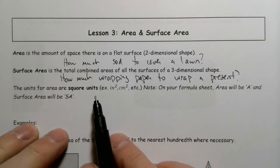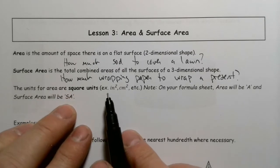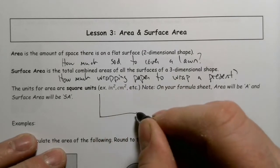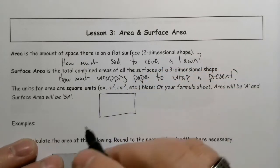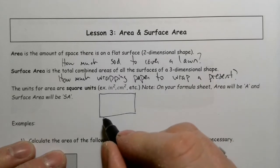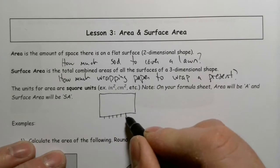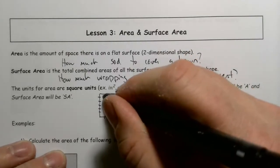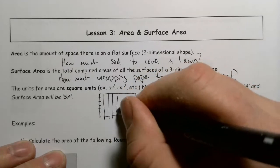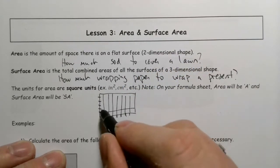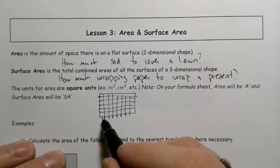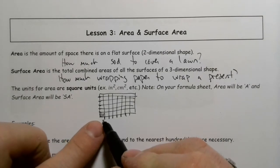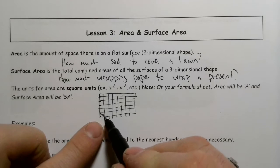The way we normally talk about area is to use square units — inches squared, centimeters squared. For a rectangle, you might have a length and a width, and you're counting how many little unit squares fit along each side. Each one of those small units is a centimeter by a centimeter — a square with four sides, each one centimeter long.